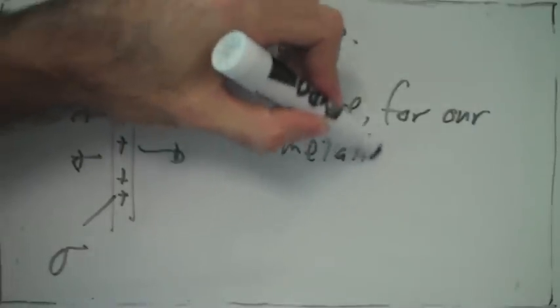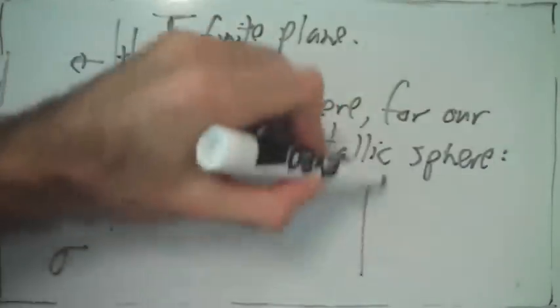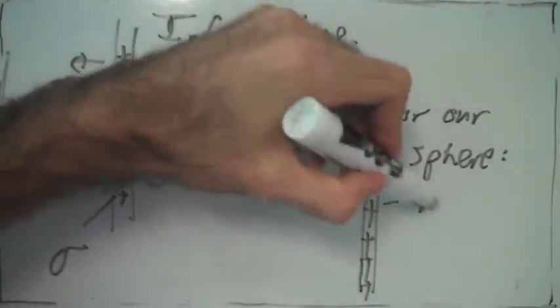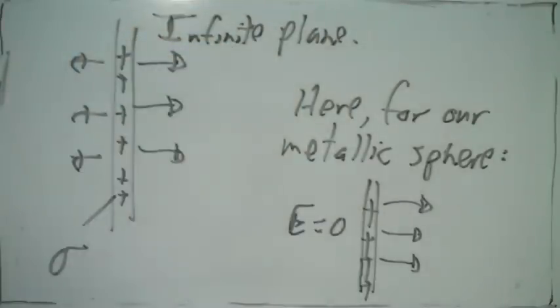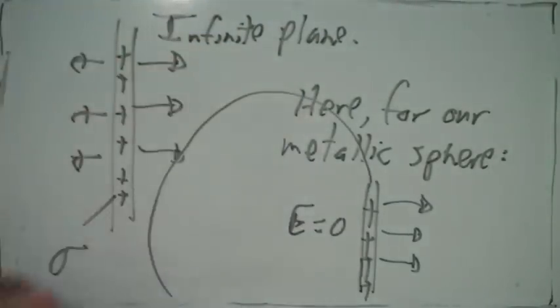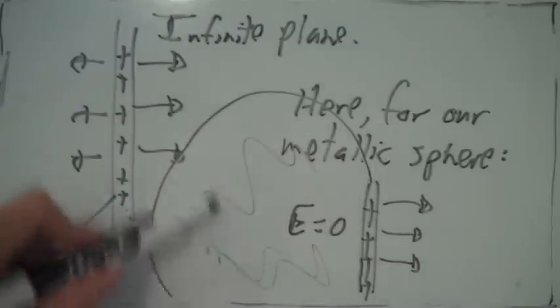But in the case of our metallic sphere, we have an electric field on one side and it's zero on the other side. The electric field inside the sphere is zero because it's a metal, and electric fields in metals are zero, but outside it's not zero. That's why it's different.